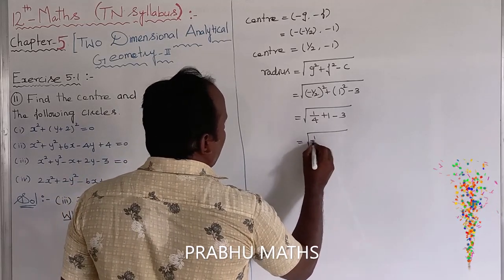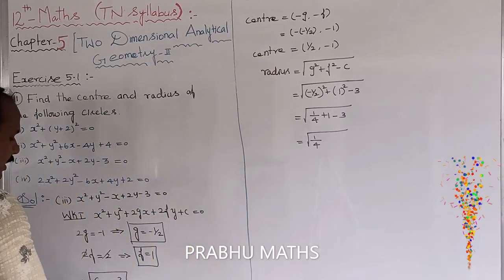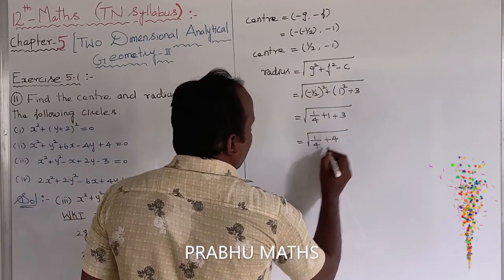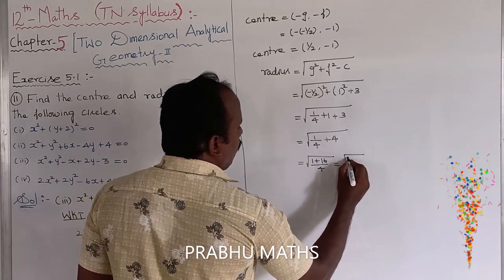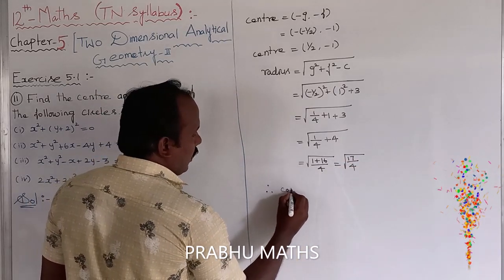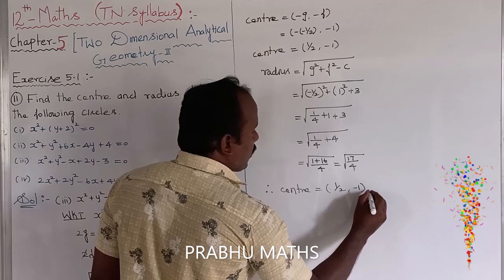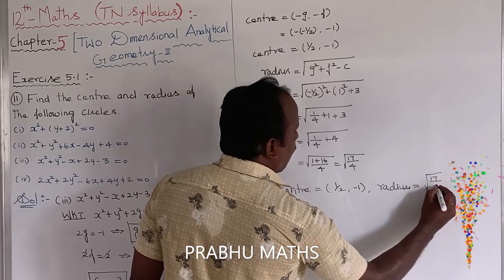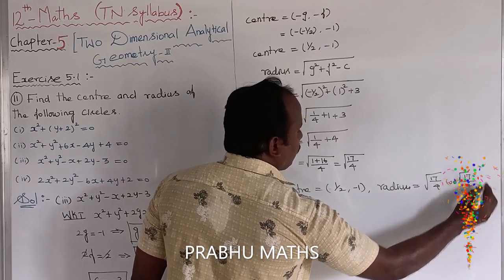That is equal to root of 1 by 4, and the remaining terms simplify. The answer is equal to the square root of 1 plus 16 divided by 4, that is equal to the square root of 17 divided by 4. Therefore, the centre is equal to 1 by 2 comma minus 1, and the radius is equal to square root of 17 divided by 2.